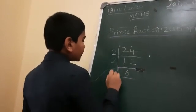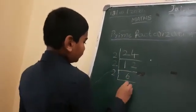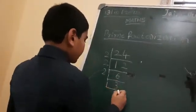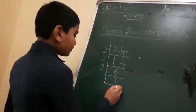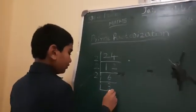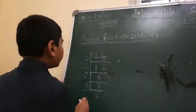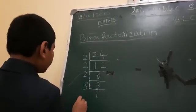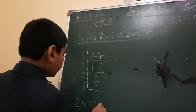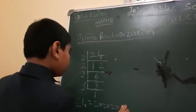And six — in which table will it come? Two tables. Two threes are six. And three — in which table will it come? Three tables. Three ones are three. So twenty-four equals two into two into two into three.